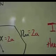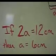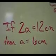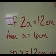Start with what you know. 12 centimeters is 2A. If 2A is 12 centimeters, divide both sides by 2, and A represents 6 centimeters.